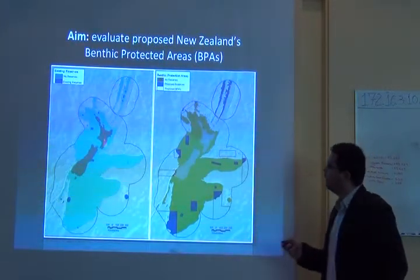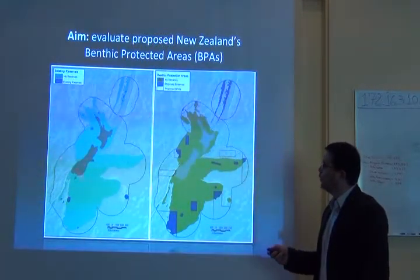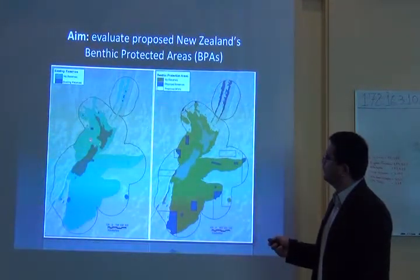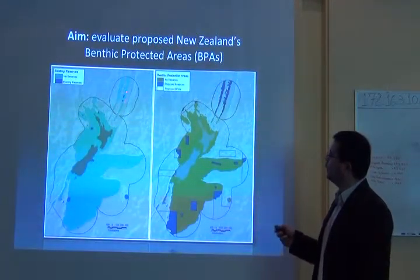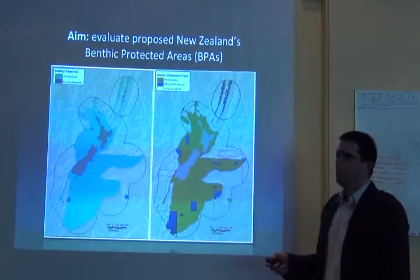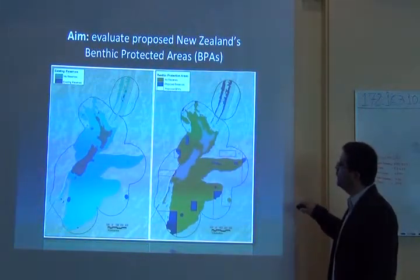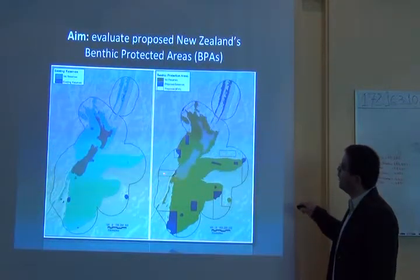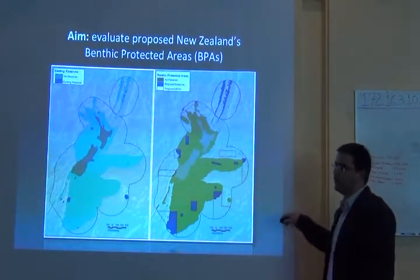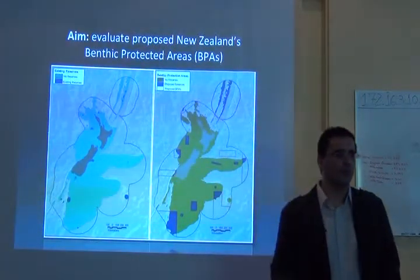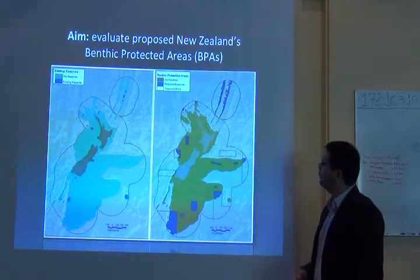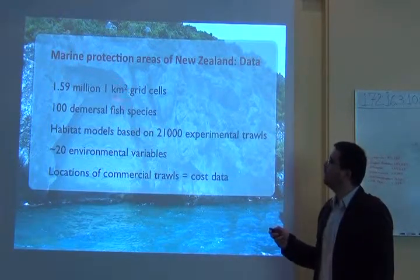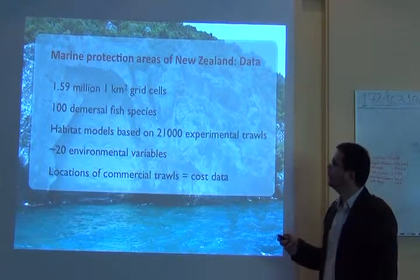Here you have New Zealand — the two islands, the North Island and the South Island. The light blue areas are non-reserves and the dark blue areas are existing reserves. They're trying to make a priority plan indicating what are the proposed reserves and where they should place additional protected areas to get the most beneficial return. They did this for 1.59 million cells with one-kilometer-square grids.